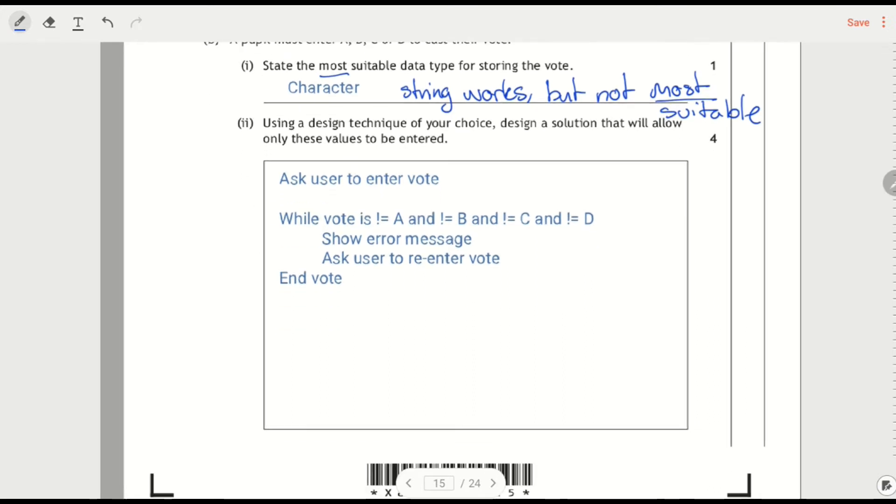And then using the design technique of your choice, design a solution that will allow only these values to be entered. Asking the user to enter their votes first of all outside the loop. Now that's actually kind of optional. It's something that we would have to do in Python but it's not too important in the design technique. What matters here is first of all I've got a while loop.